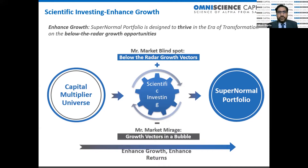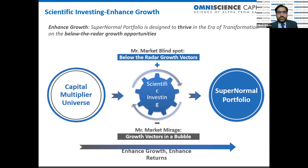From the capital multiplier universe, when we discover a new growth vector bottom-up, there are several companies in each growth vector. You're typically able to discover three to seven growth vectors at a time that are yet unidentified by Mr. Market but which hold great promise. You then create a supernormal portfolio diversified across multiple growth vectors.